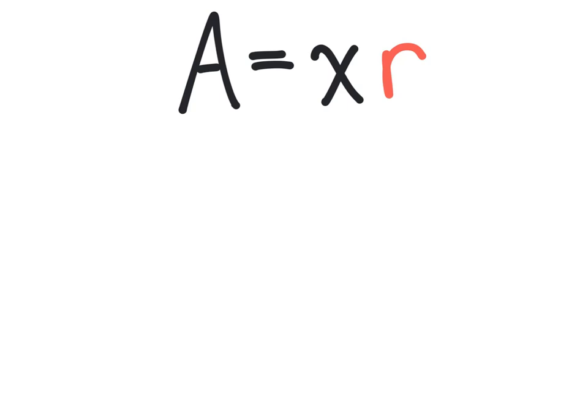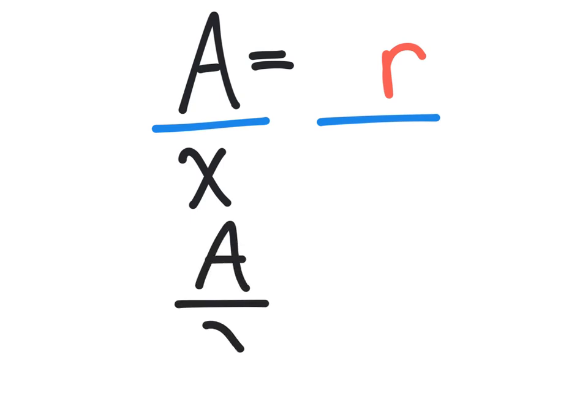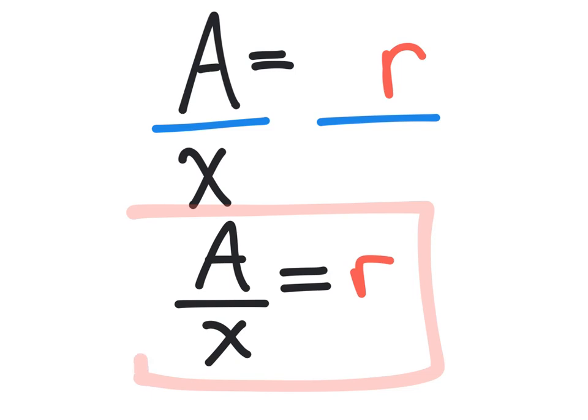The other way we can solve this question uses the same equation, still solving for r. What I'd like you to do is draw a line on both sides of the equation. When we move a variable to the other side of the equation, it has to go either above or below that line, depending on what it's doing on the other side. Right now, x is above that line, so that means when we move it to the other side, it has to go below. Therefore, we can rewrite that equation, and our final answer would be a divided by x equals r once again — and of course, can't forget the box.